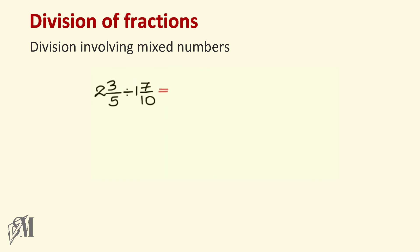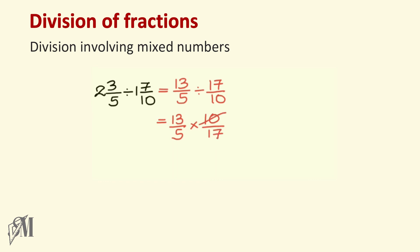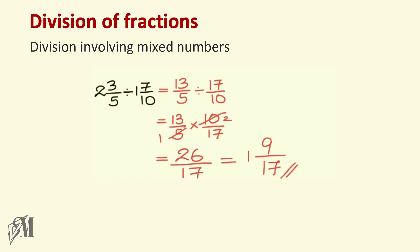The final example is division of a mixed number by a mixed number. Convert both mixed numbers into improper fractions — that gives thirteen over five divided by seventeen over ten. Write thirteen over five as it is, replace division with multiplication, and write the reciprocal of seventeen over ten, which is ten over seventeen. Cancel ten and five by five to get two and one. The answer becomes twenty-six over seventeen, and converting to a mixed number gives one and nine over seventeen.